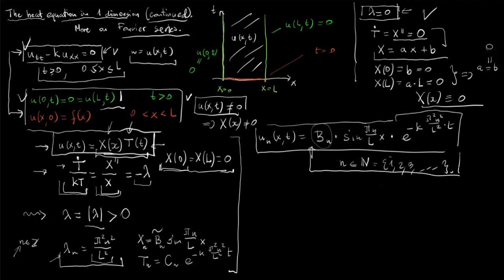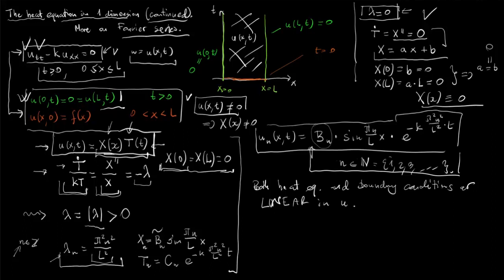What we also observed last time is that the conditions — the heat equation and the boundary conditions on the lateral parts of our region — are linear in u. Therefore, if we have two solutions to these conditions, their linear combination is also a solution.